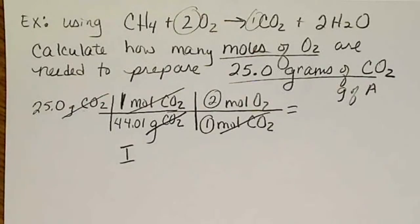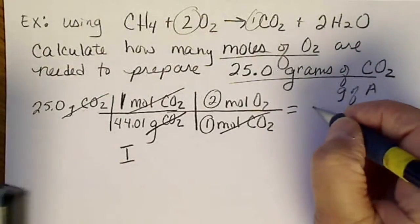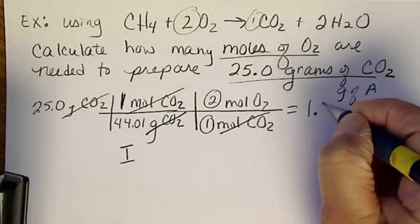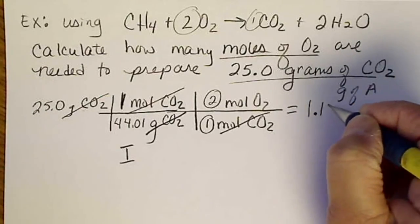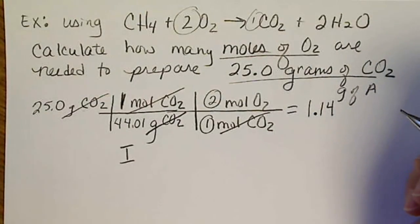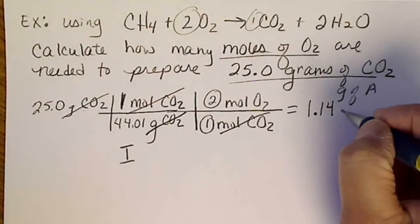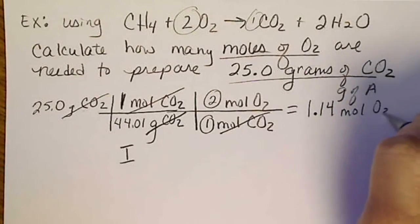So we're just going to take 25, divide it by 44, and multiply by 2. And when we do that, the answer is 1.14 moles of O2, if we round that to three significant figures.